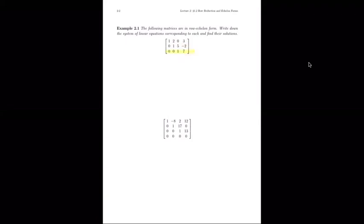The book does not require the first non-zero element to be a one, so this could equivalently have two and 14 instead of one and seven and still be in row echelon form according to the book. Each column corresponds to the coefficients of x1, x2, and x3, with the augmented column as the right-hand side. Interpreting this row echelon matrix back into the system: x1 plus 2x2 equals 3, then x2 plus 5x3 equals negative 2, and then x3 equals 7.